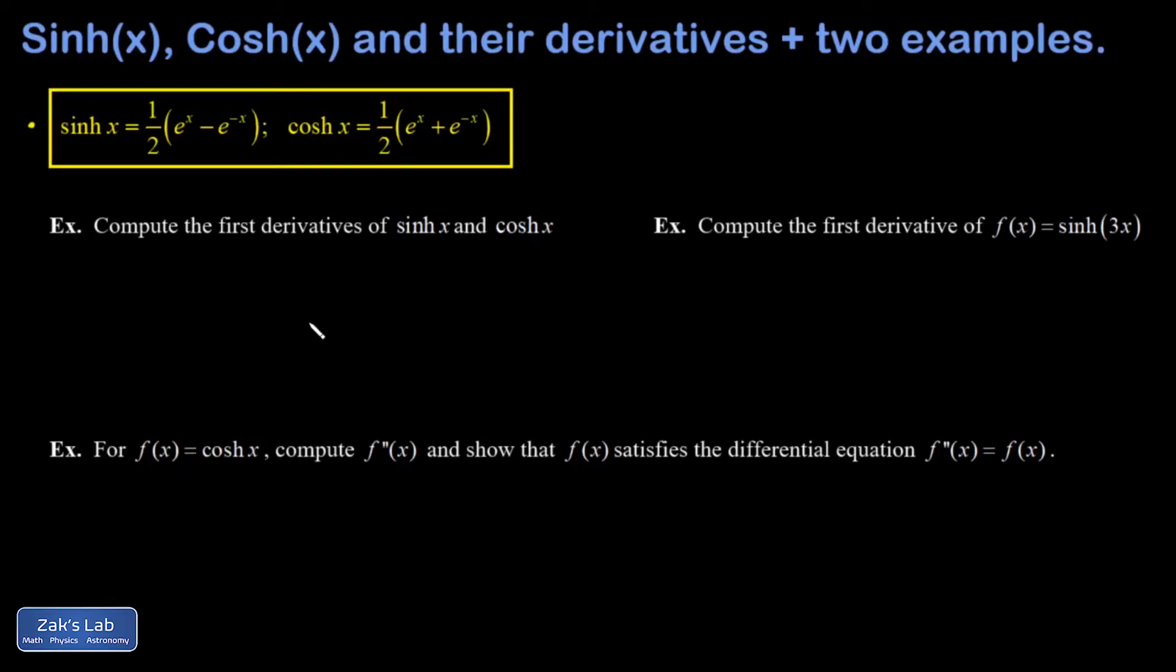And then we want to figure out what are the derivatives of these things. If I look at the derivative of sinh, the one half is a spectator. And then I have the derivative of e to the x, which is just e to the x. And then I have in my second term, the derivative of e to the negative x.